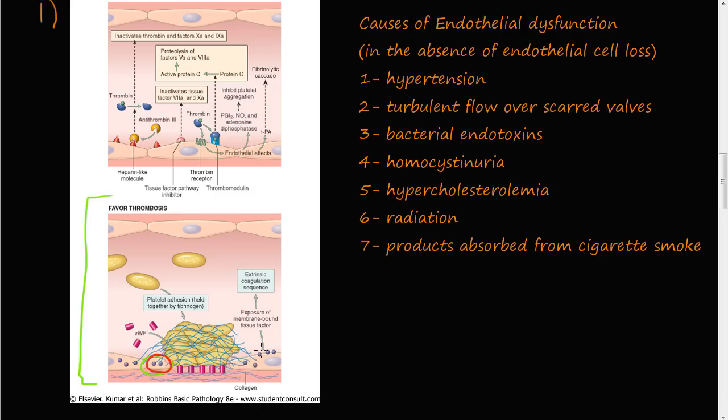These endothelial cells also expose tissue factor, and remember that tissue factor is the activator for the extrinsic coagulation cascade. So that's how a blood clot forms if these endothelial cells are damaged and expose the extracellular matrix.